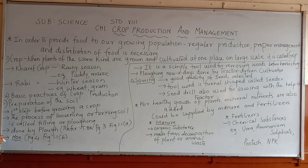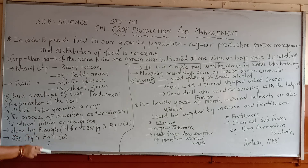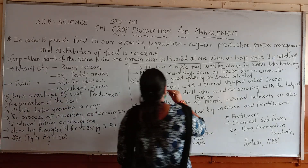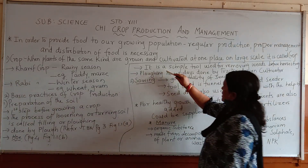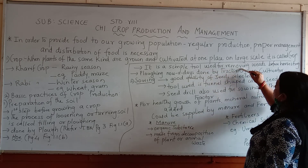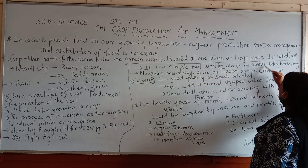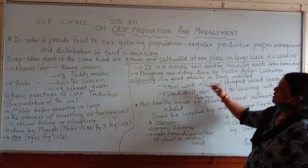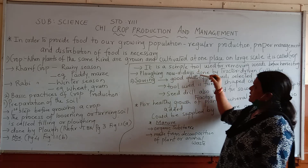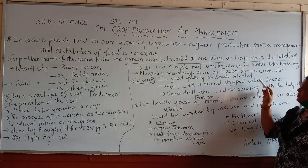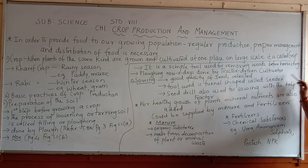There is a figure on page four, figure 1.1b. What is a hoe? It is a simple tool used for removing weeds. Plowing nowadays is done by tractor, seed drill, and cultivator.